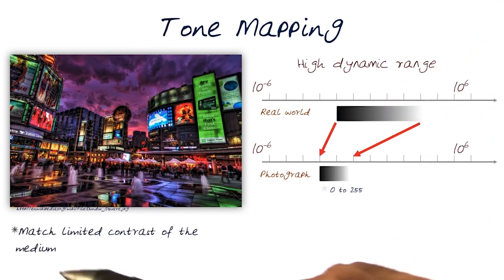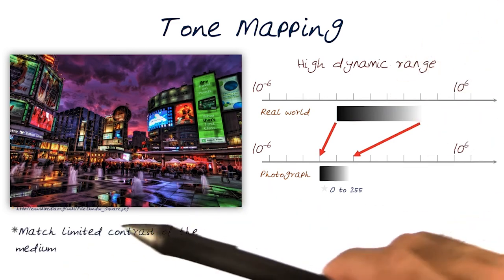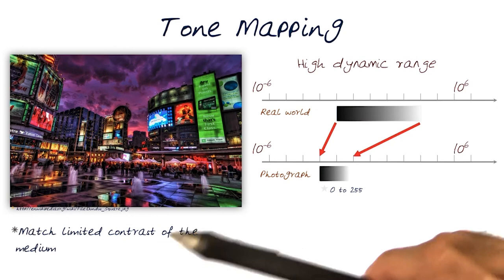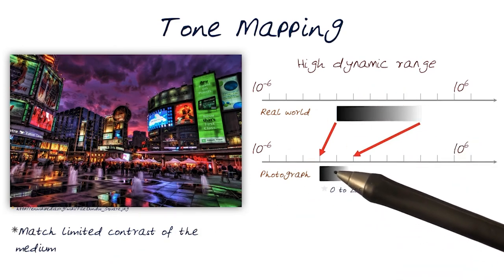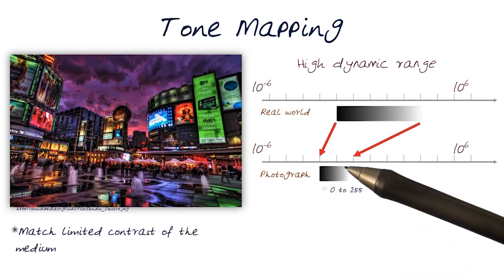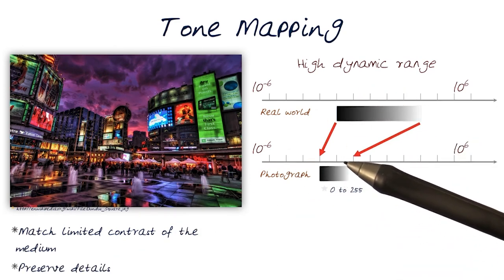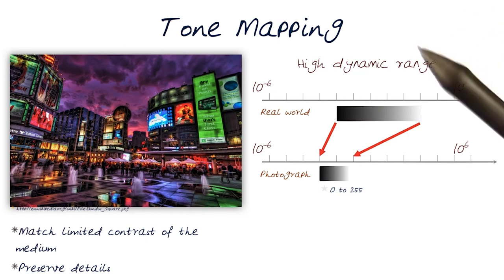What tone mapping does is take the limited contrast information and map it to the display medium you're using, while preserving details. We'll be covering a bit more of tone mapping in the class.